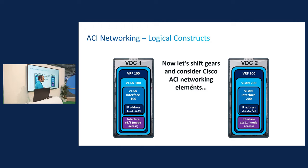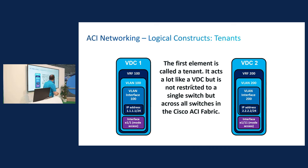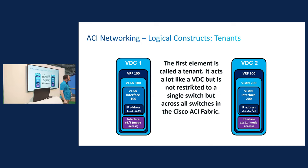Now let's shift gears. Whenever I'm dealing with something brand new and unfamiliar, I try to relate it to something I already know, which is the reason I started talking about this other stuff. So now let's start talking about ACI. The first element is called a tenant — it's the master container for everything else. Think about the objects in ACI like Russian dolls nested within one another, just like you would in a VDC. One thing that's different though is you're not restricted to a single switch like you are with the Nexus 7000 — you can have it across all the switches in the fabric.